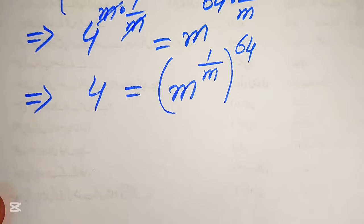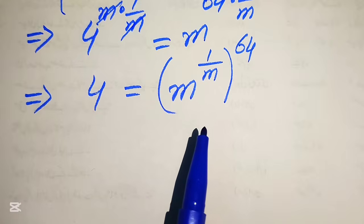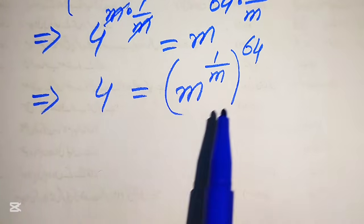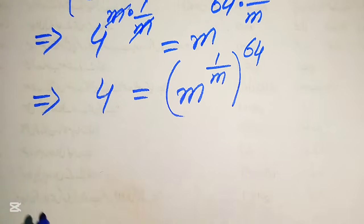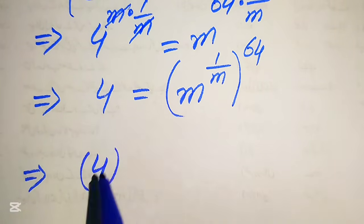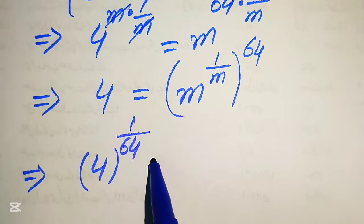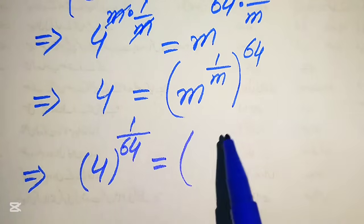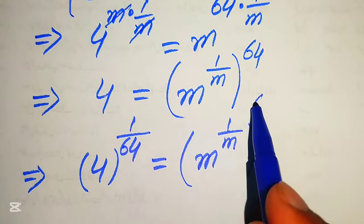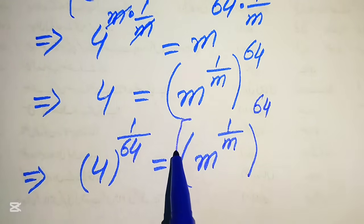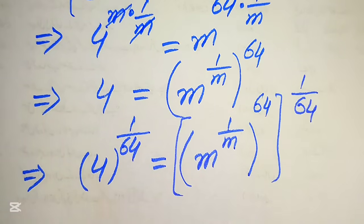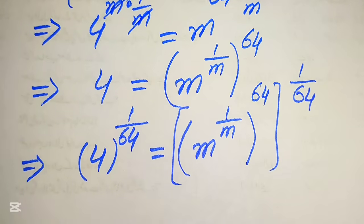Now we move the constant 64 to the left hand side by taking the 64th root on both sides, which means we take the 1 over 64 power on both sides. So we write 4^(1/64) on the left, raised to the 1 over 64th power.